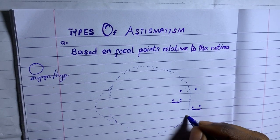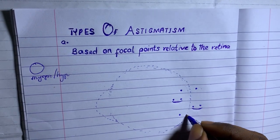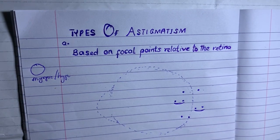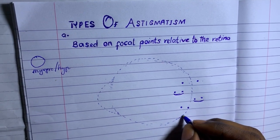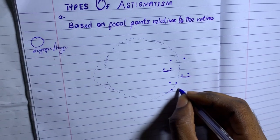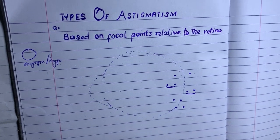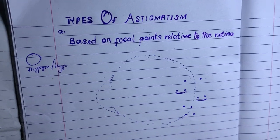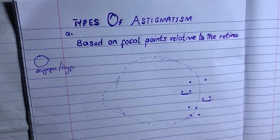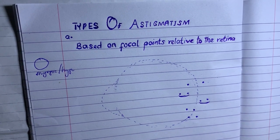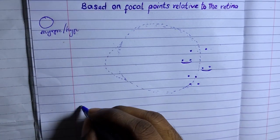When one focuses on the retina and one is in front of the retina, that becomes simple myopic astigmatism. When one is on the retina and one is behind, that becomes simple hyperopic astigmatism. So today we want to look at the types of astigmatism and how to do the calculations to come out with prescriptions — whether they are mixed, compound hyperopic, and so on.